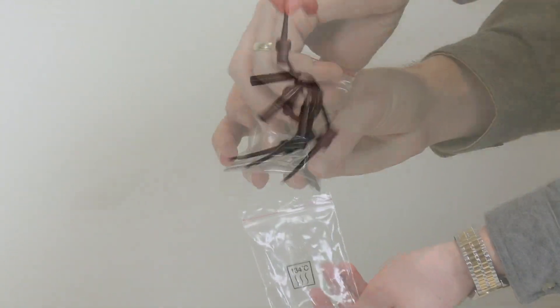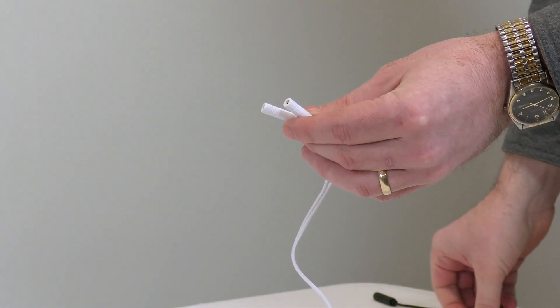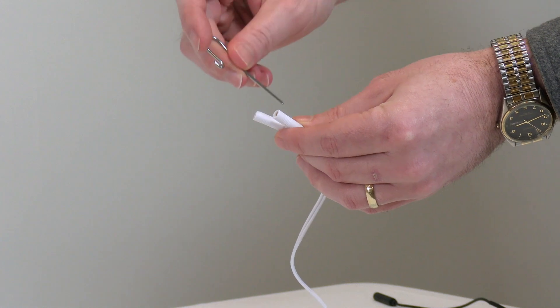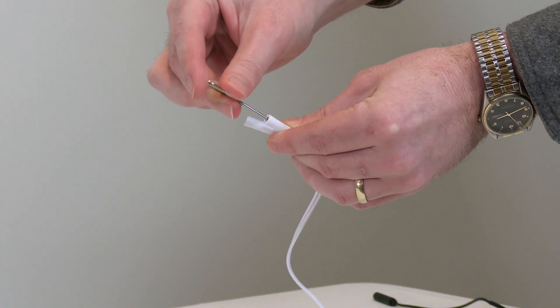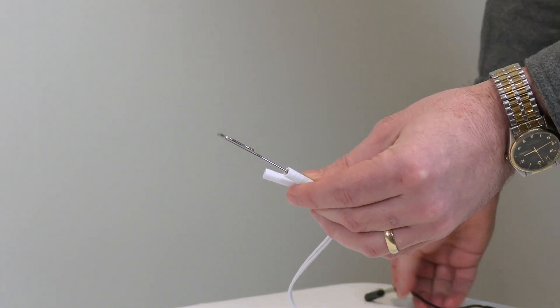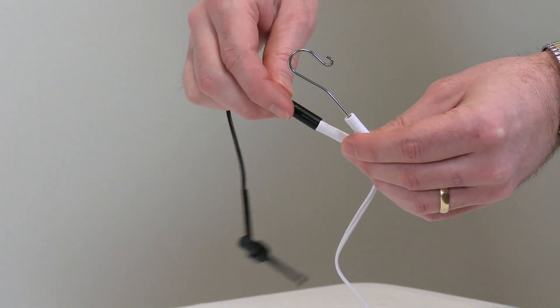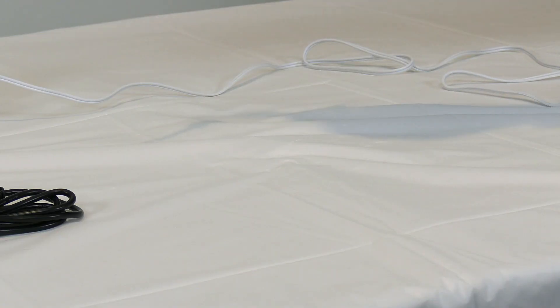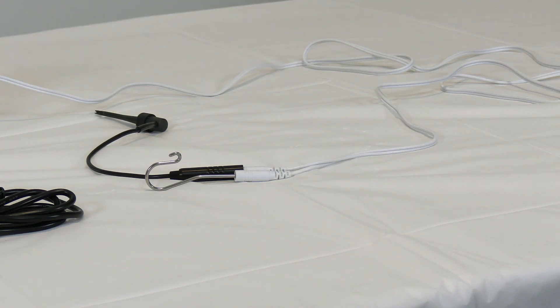Next remove a file clip and lip hook from their bags. Insert the file clip and lip hook respectively into the two sockets of the measuring wire. Please use the original components included in the Apex Locator Kit. Other brand components may not be compatible, causing inaccurate measurements.